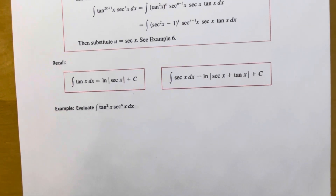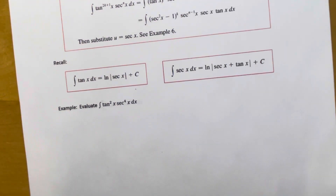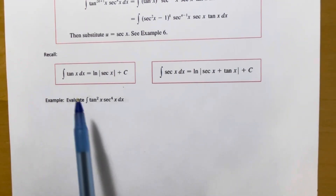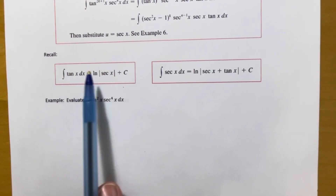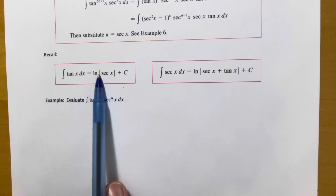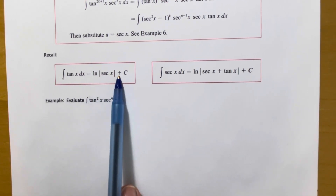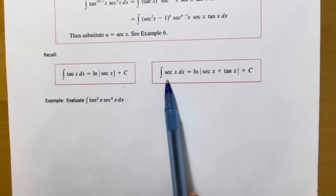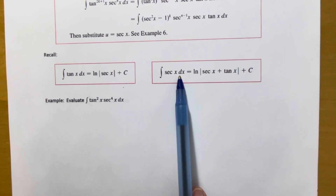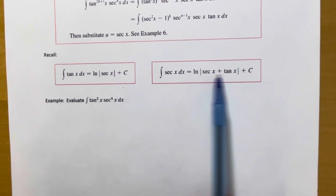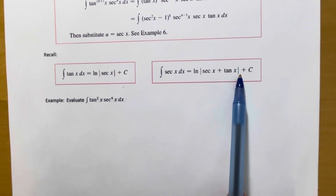A couple of integrals that will be important to remember — you would have seen these in Calculus 1. The integral of tangent is the natural log of the absolute value of secant of x plus c. The integral of secant of x dx is equal to the natural log of the absolute value of secant plus tangent, plus c.